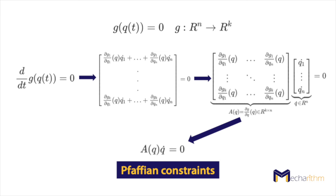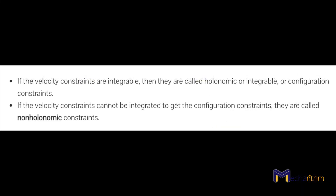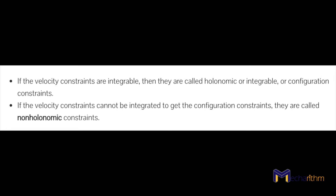These are called Pfaffian constraints, or velocity constraints, and there are two conditions. If it is possible to integrate the velocity constraints, they are called holonomic, integrable, or configuration constraints, which reduce the dimension of the C-space and thus the degrees of freedom. But if the velocity constraints cannot be integrated to get configuration constraints, they are called non-holonomic constraints, and non-holonomic constraints do not reduce the dimension of the C-space but reduce the space of possible velocities.